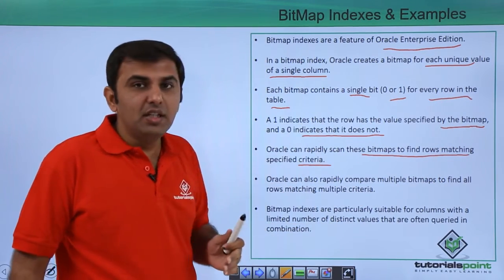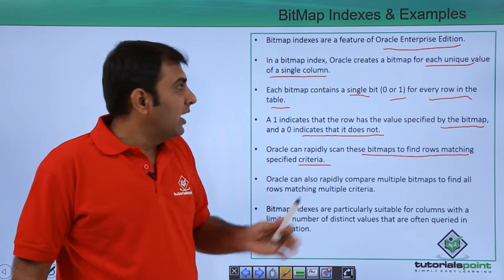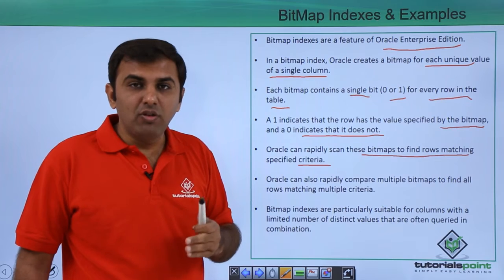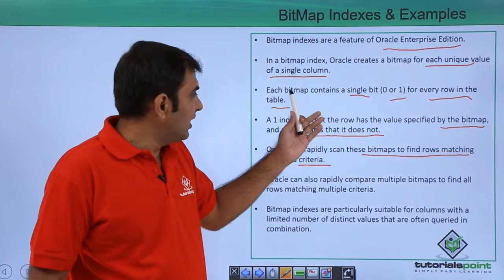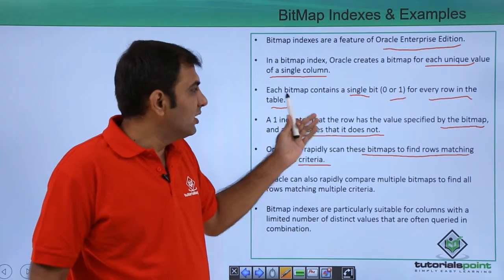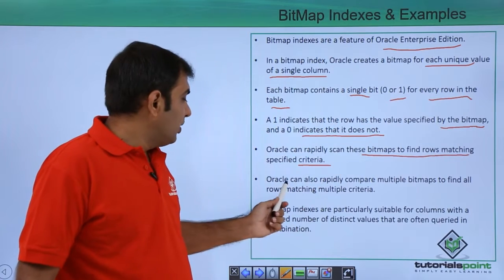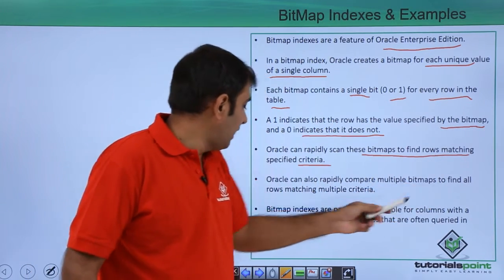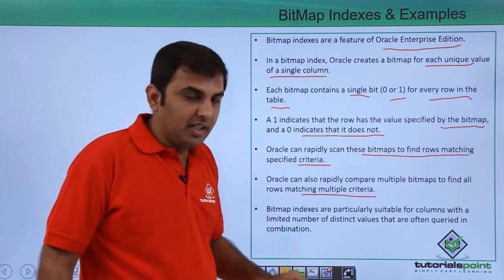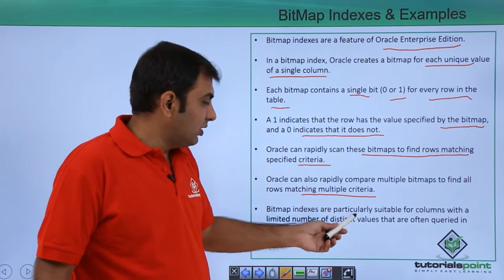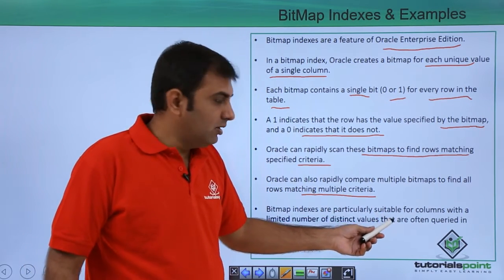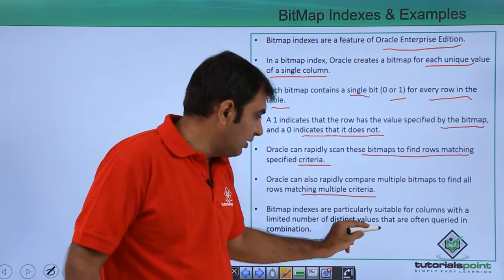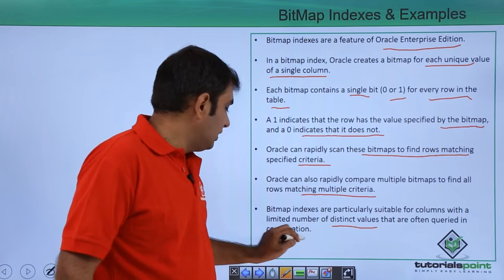Whenever you are creating a bitmap index, each bitmap is created for each unique value with 0 and 1 — 0 means the bitmap is not there, and 1 means the bitmap is there. Oracle can also rapidly compare multiple bitmaps to find rows matching multiple criteria. Bitmap indexes are particularly suitable for columns with a limited number of distinct values that are often queried in combination.